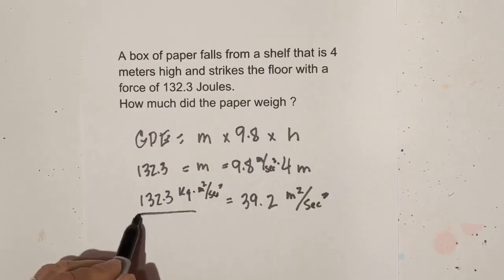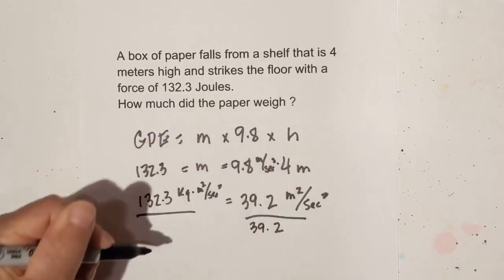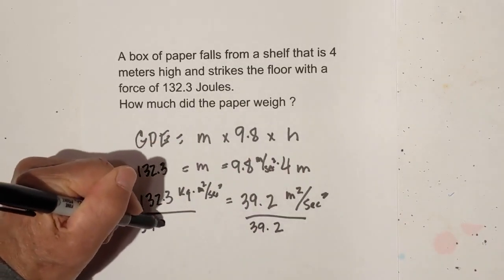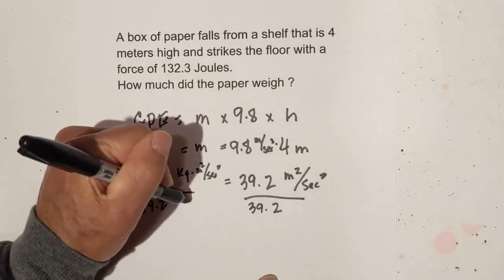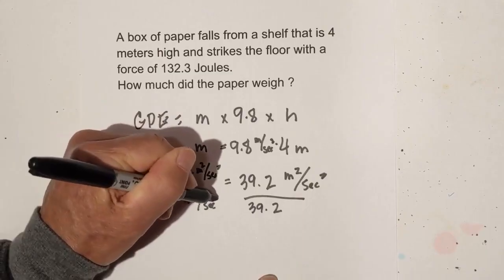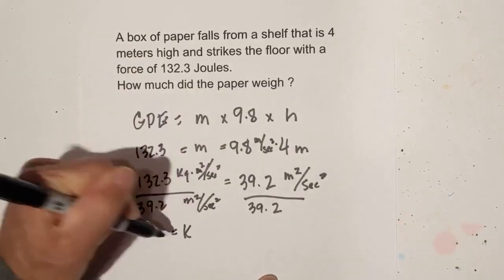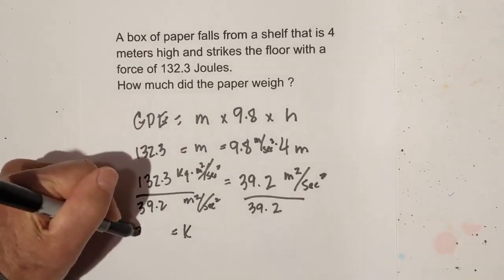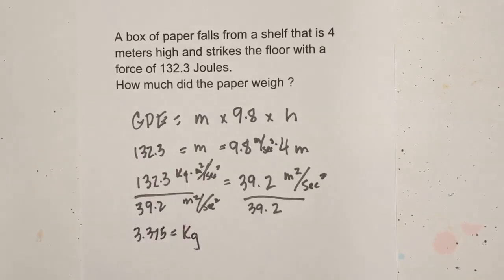Let's divide both sides by 39.2 and the units. When we divide this by 39.2, let's bring our units over. That is meters squared per second squared. These cancel, you're left with kilograms. And 132.3 divided by 39.2 is 3.375 kilograms.